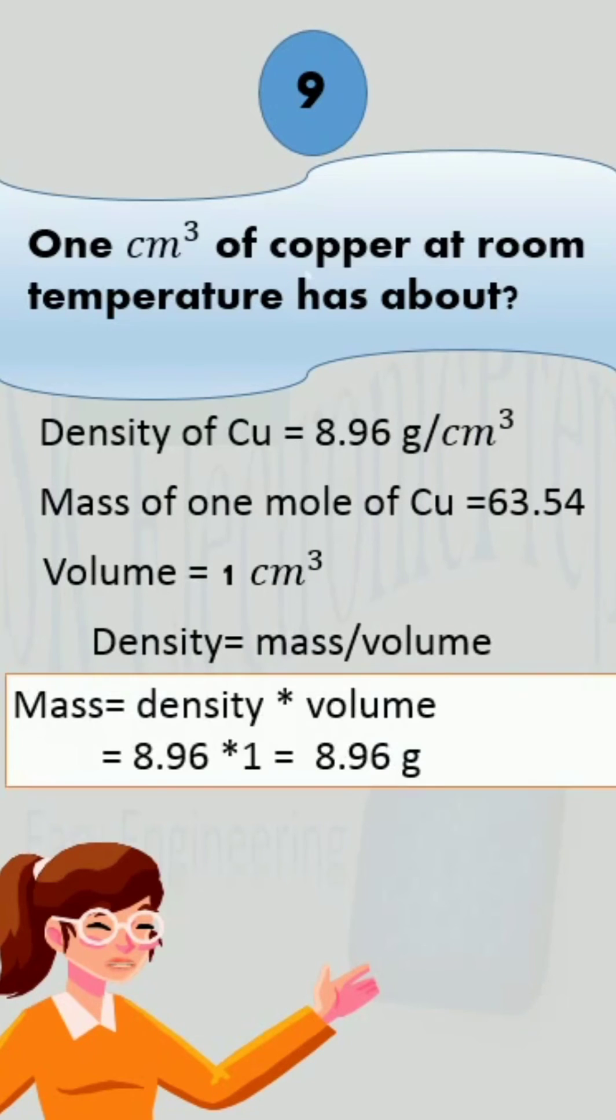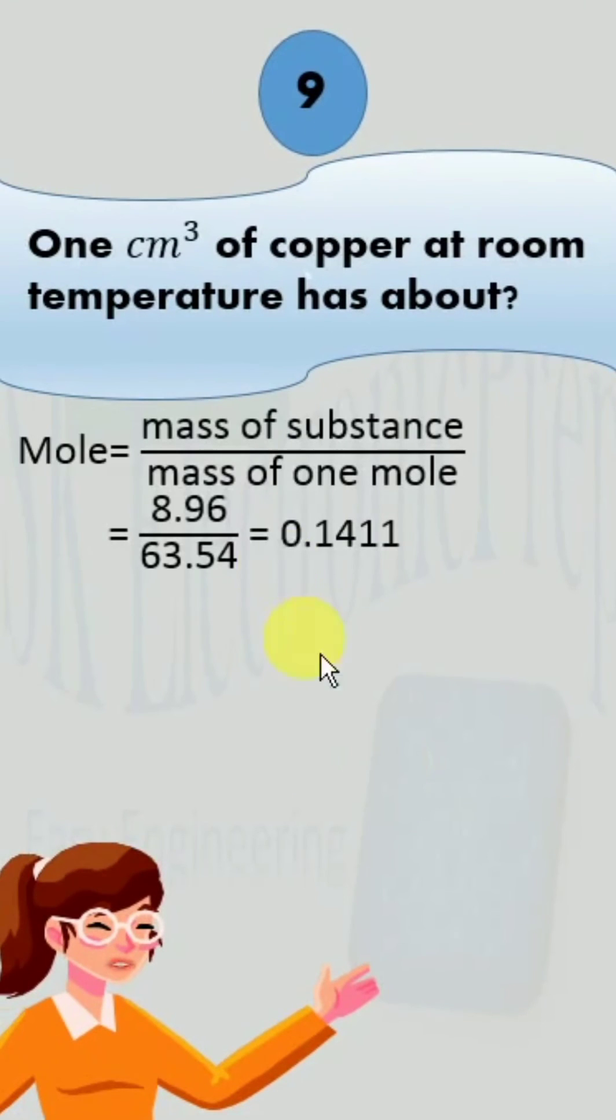We rearrange the formula to obtain mass. Formula becomes mass is equal to density into volume. Put in the values and you get the mass.